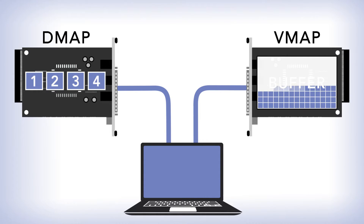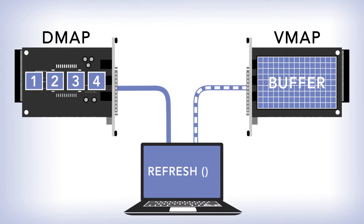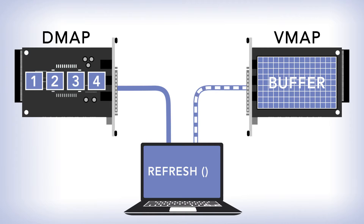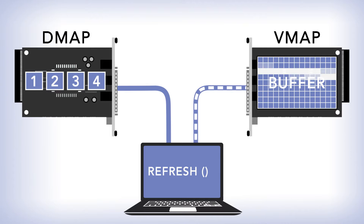VMAP accesses a hardware buffer, so it returns many data points per channel to the memory map. VMAP is thus very appropriate for messaging I/O boards like CANbus, Serial, ARINC 429, and MIL-STD-1553, but it also can be used on AIO boards.